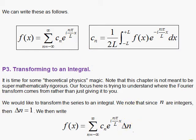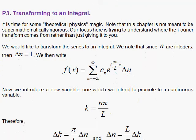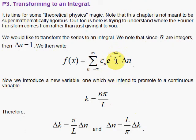Then I notice it would be nice if this exponential here, nπ/L, could be one variable. So I'm going to pick k, which is proportional to n, to be the variable that I'm going to promote to a continuous variable. Here Δk = π/L Δn, and Δn = L/π Δk.